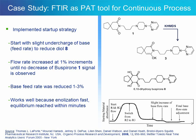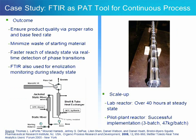In order to minimize formation of 6,10-dihydroxybuspirone — the impurity resulting from double deprotonation of buspirone — the base feed rate is slightly reduced, something like 1–3%. This is observed through a slight increase of buspirone concentration, representing the optimum working point. In conclusion, real-time FTIR monitoring ensured product quality through proper tuning of the base-to-starting-material feed rate, helped minimize waste by minimizing start-up time, and allowed monitoring of anion concentration stability during steady state. The lab reactor was run at steady state for more than 40 hours, and the process was subsequently implemented at plant scale for the production of almost 50 kg of material.